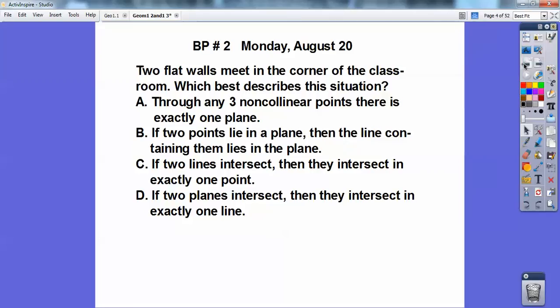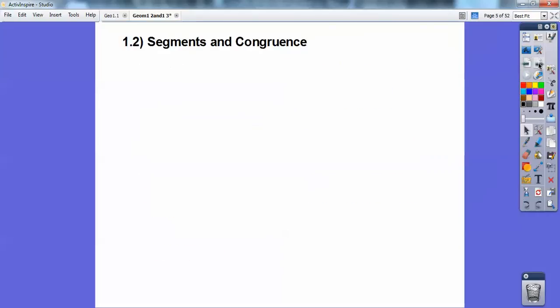I see a line back there, but if two points lie in a plane, then the line that contains them lies in a plane? No, that's a theorem that you're going to see later on. If two lines intersect, then their intersection is exactly a point. No, if two planes intersect, then their intersection is exactly one line. That's the one right there. They intersect in that line right there.